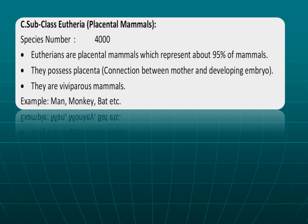Eutherians live in varied habitats. They are aerial — for example, the bat is an aerial placental mammal. Some are aquatic, like the whale. Others live on land, such as man, monkey, and elephant.